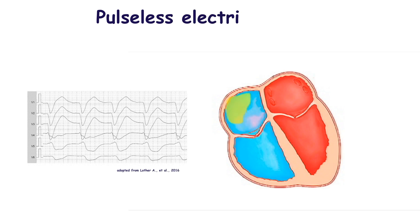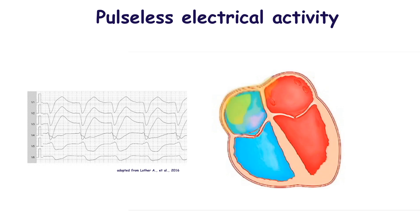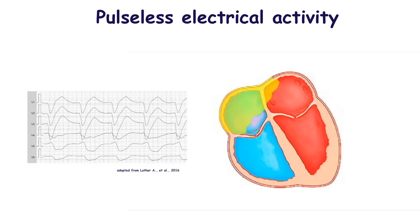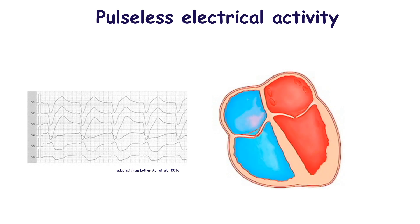Pulseless electrical activity, also called electromechanical dissociation, is a type of cardiac arrest in which there is a heart rhythm that should produce a pulse, but the pulse is absent. In this case, there is electrical activation of the cardiac muscle cells, but cardiac output is too low to produce a pulse or is completely absent. This leads to insufficient blood supply of body tissues.